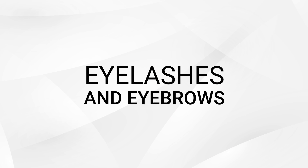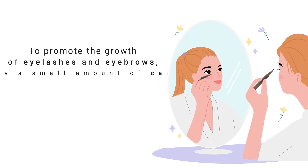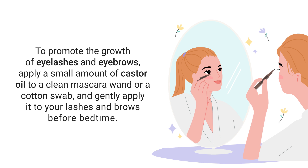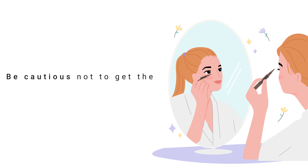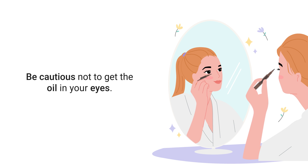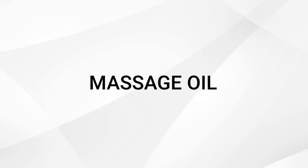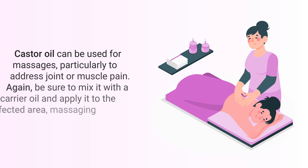Castor oil can also be used to promote the growth of eyelashes and eyebrows. Apply a small amount to a clean mascara wand or a cotton swab and gently apply it to your lashes and brows before bedtime. Just be cautious not to get the oil in your eyes.